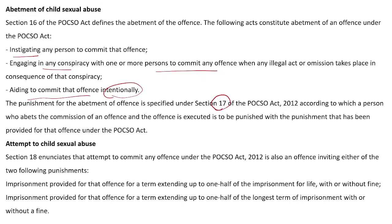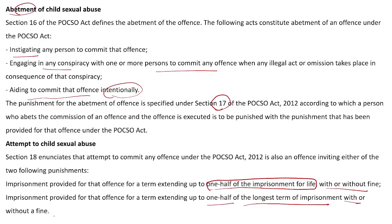Attempt to commit child sexual abuse: abetment means encouraging or giving incentive, while Section 18 deals with attempting to commit the offense. In that case, the punishment is imprisonment extending up to one half of the imprisonment for life with or without fine, or one half of the longest term of imprisonment with or without fine. Two punishments are mentioned under Section 18.